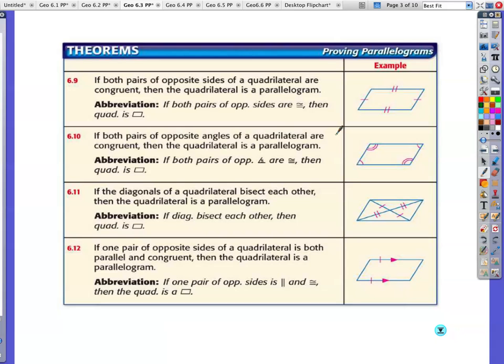If the diagonals of the quadrilateral bisect each other, then the quadrilateral is a parallelogram. And if one pair of opposite sides of the quadrilateral is both parallel and congruent, then the quadrilateral is a parallelogram. So opposite sides, parallel and congruent, then you can just say, hey, you guys, I've got a parallelogram.